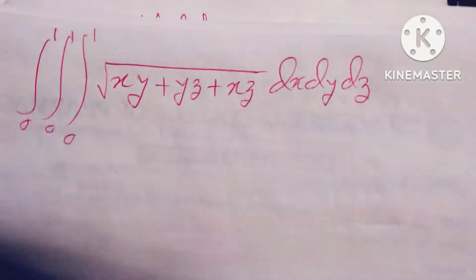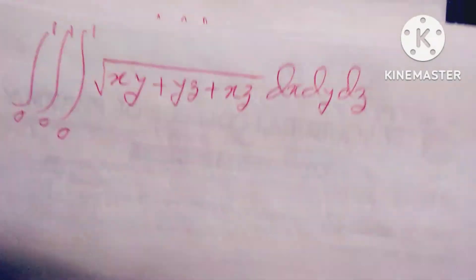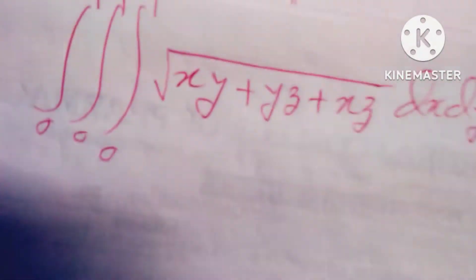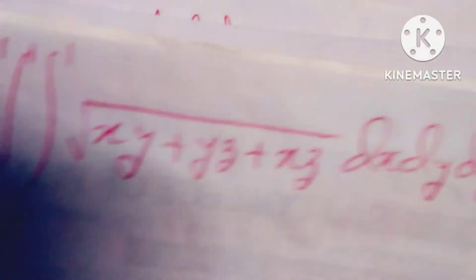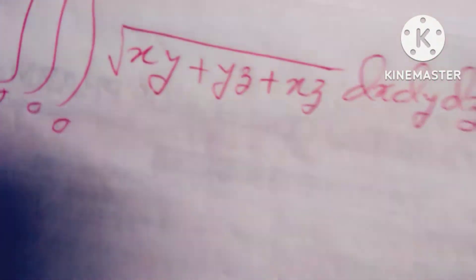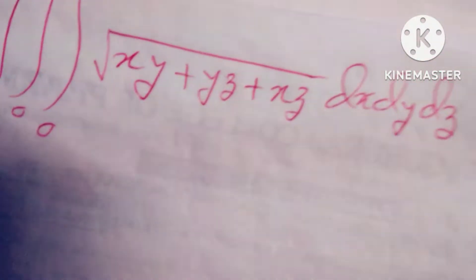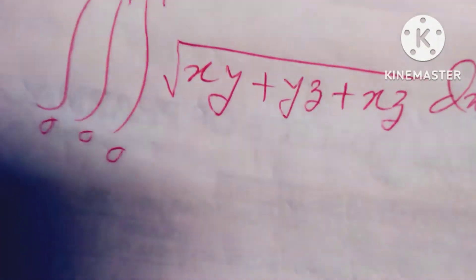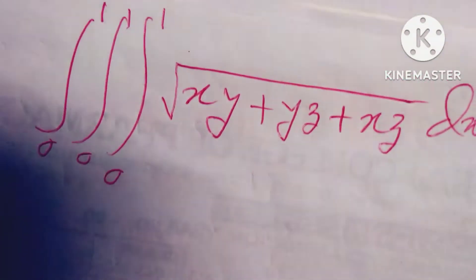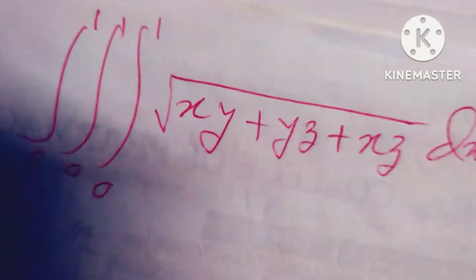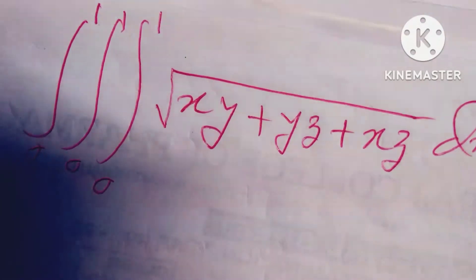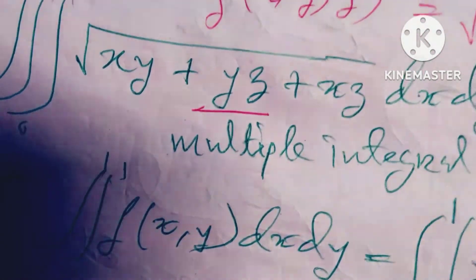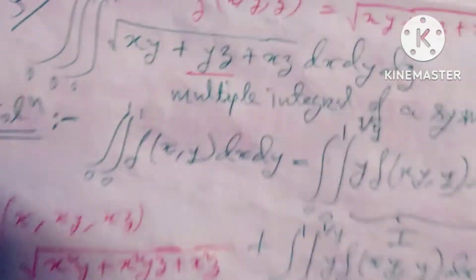Hello dear friends, welcome to my channel. Today's discussion is triple integration — the integral of root over xy·yz·xz, dx dy dz. This problem can be solved by the following process.